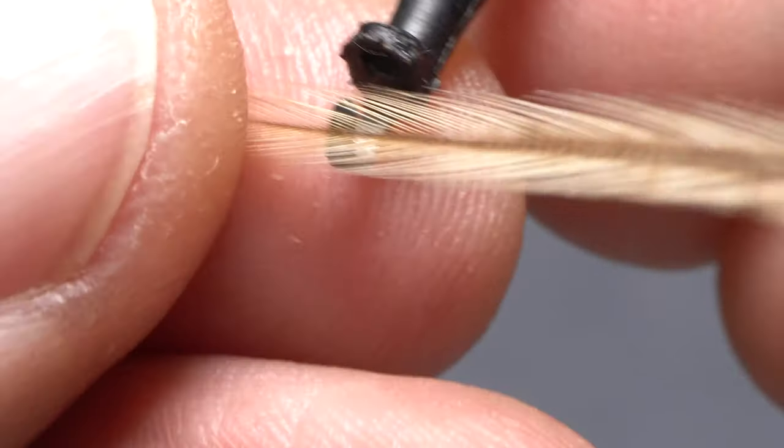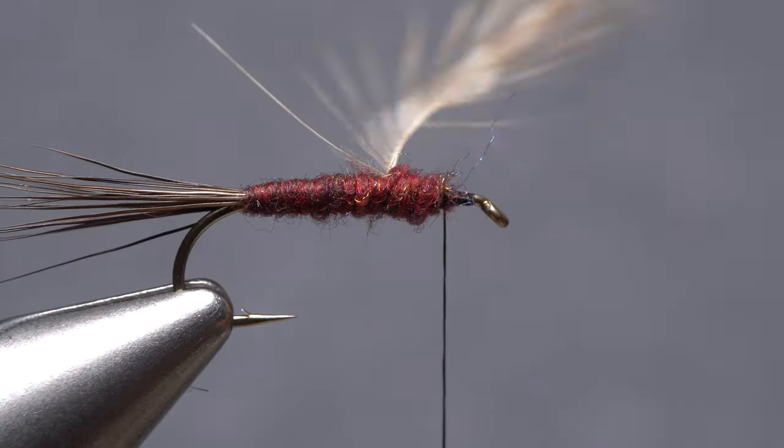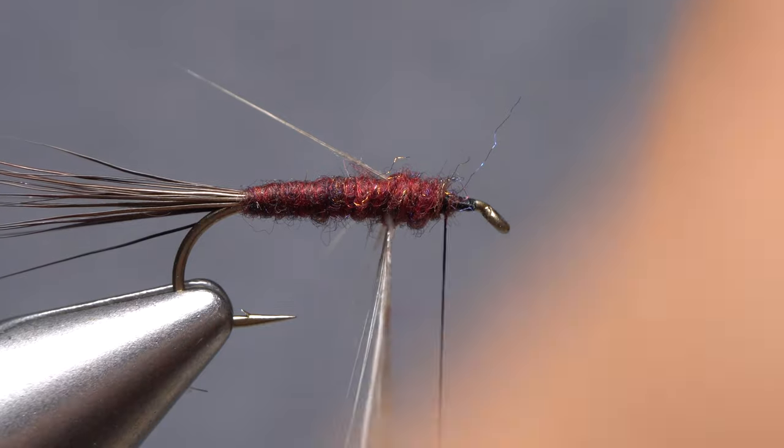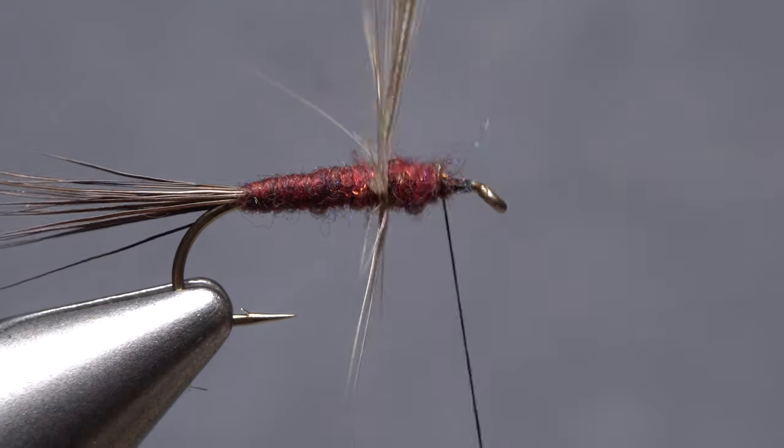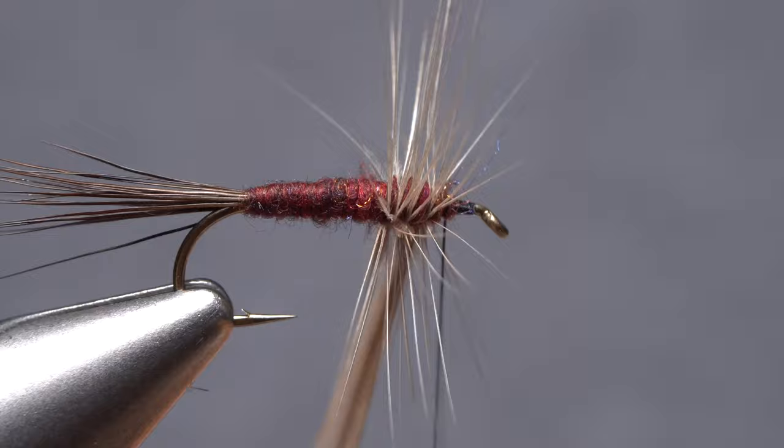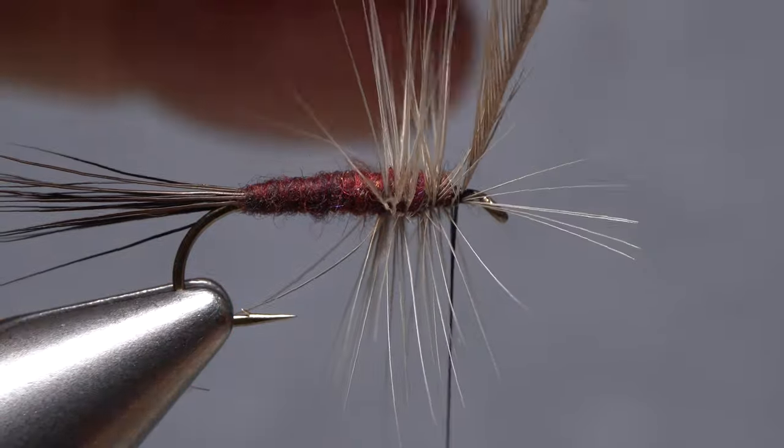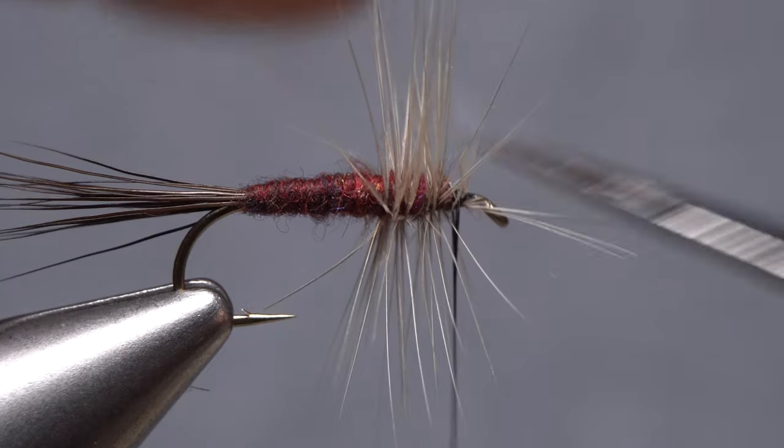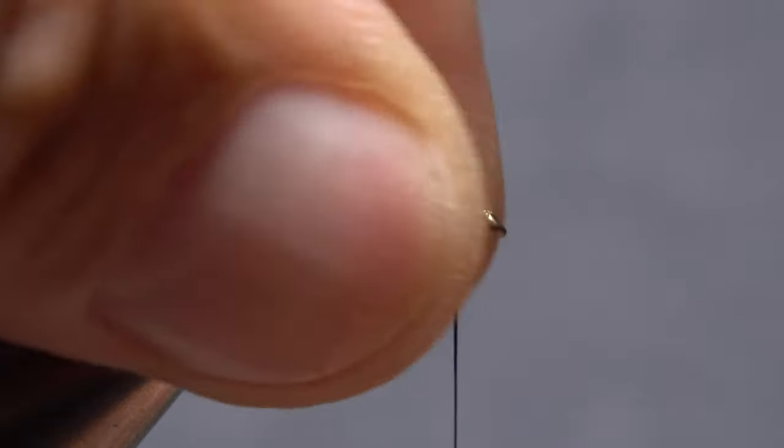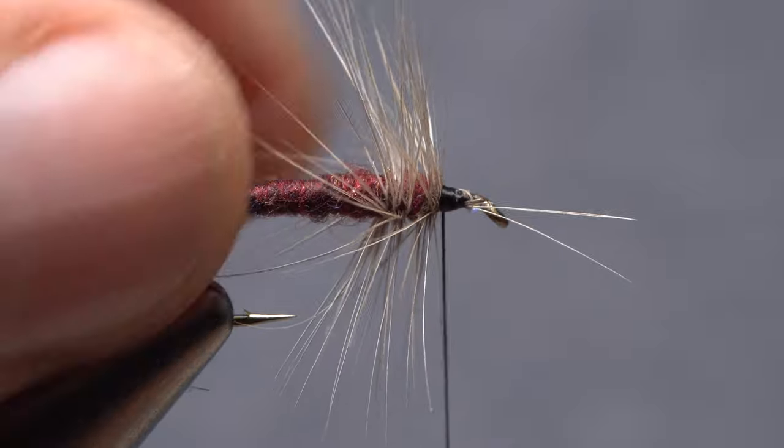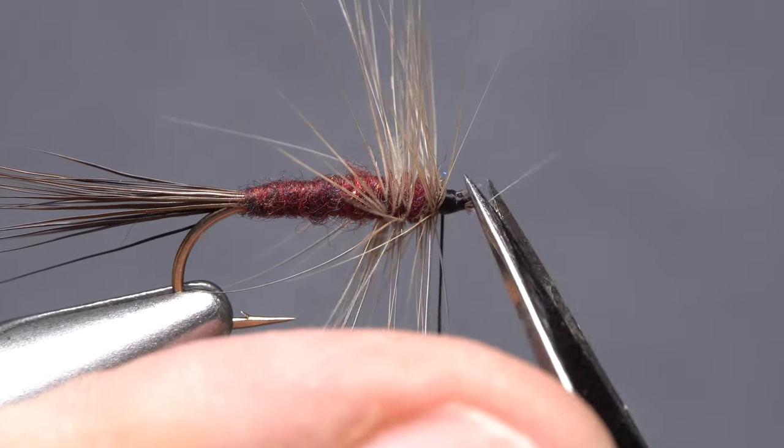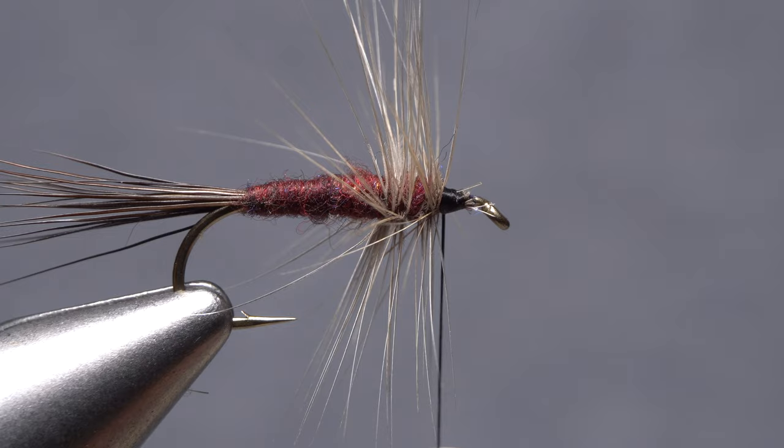Get hold of the feather's tip with hackle pliers and start making slightly open spiral wraps with the feather up the shank. Four or five turns should be plenty. When you reach your tying thread, use it to anchor the feather's tip then snip the excess off close. If you have any errant forward pointing fibers, pull them rearward and use thread wraps to hold them back or simply trim them off.